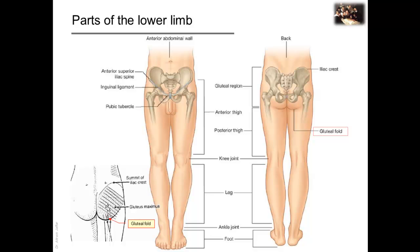The anterior thigh is located between the inguinal ligament and the knee joint. The hip joint is just inferior to the middle third of the inguinal ligament. The posterior thigh is between the gluteal fold and the knee. The leg is between the knee and the ankle joint, and the foot is distal to the ankle joint.